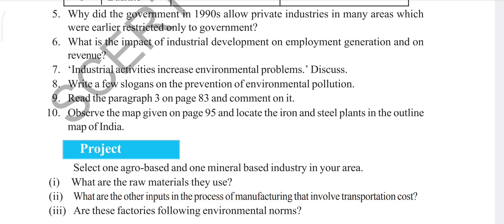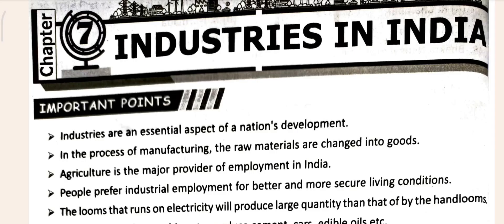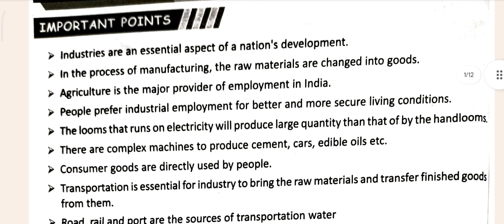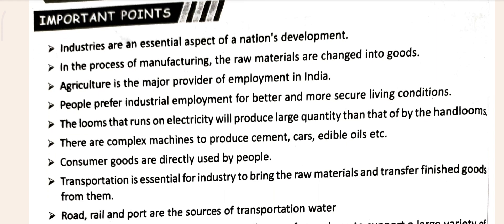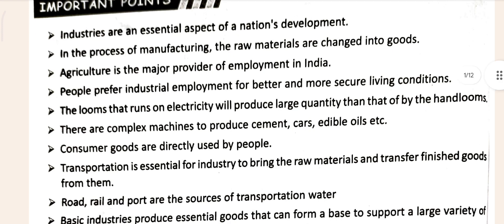Now let's move to our answers. You can see this is Chapter Number 7 - Industries in India. Before moving to keywords and question answers, let's see the important points first, then we'll move to our answers. You can see these are some important points about this chapter.